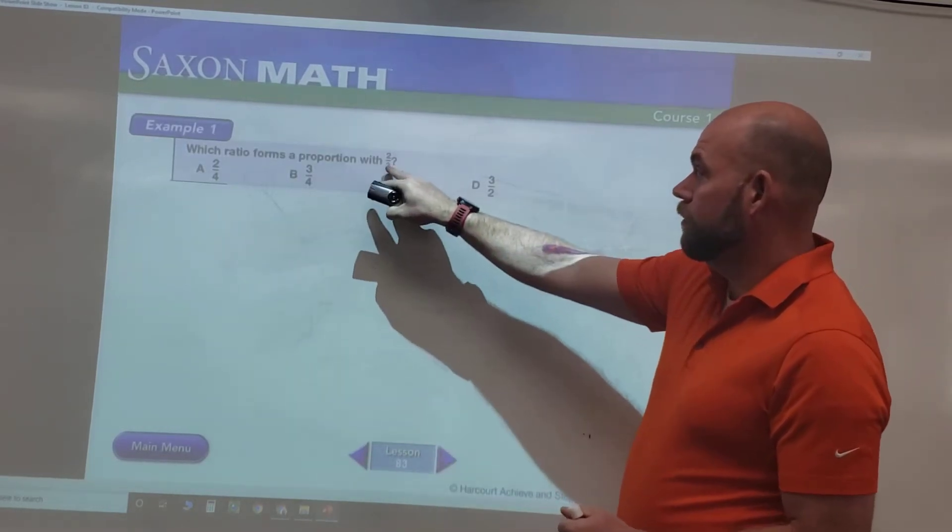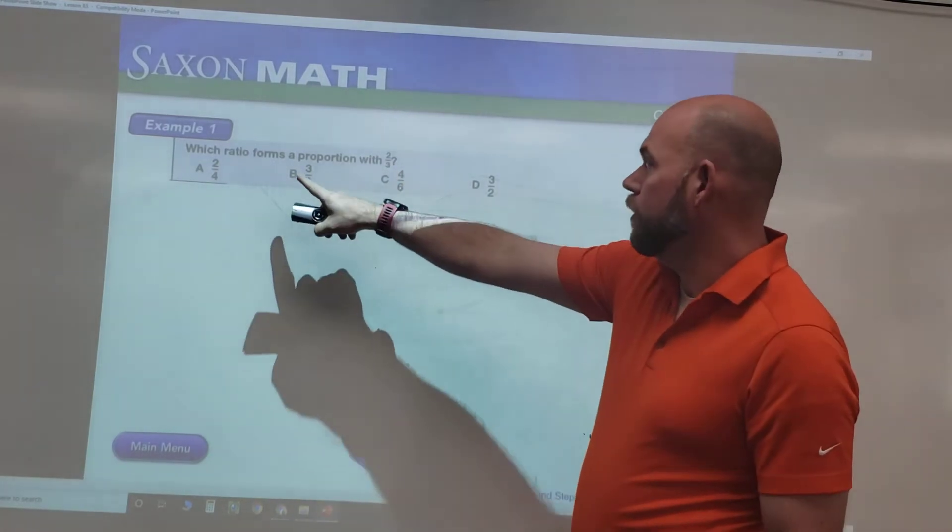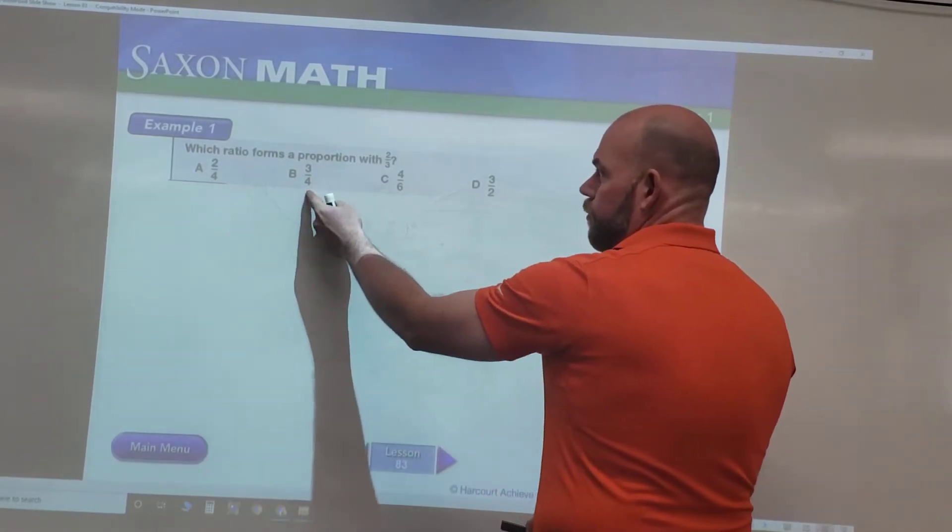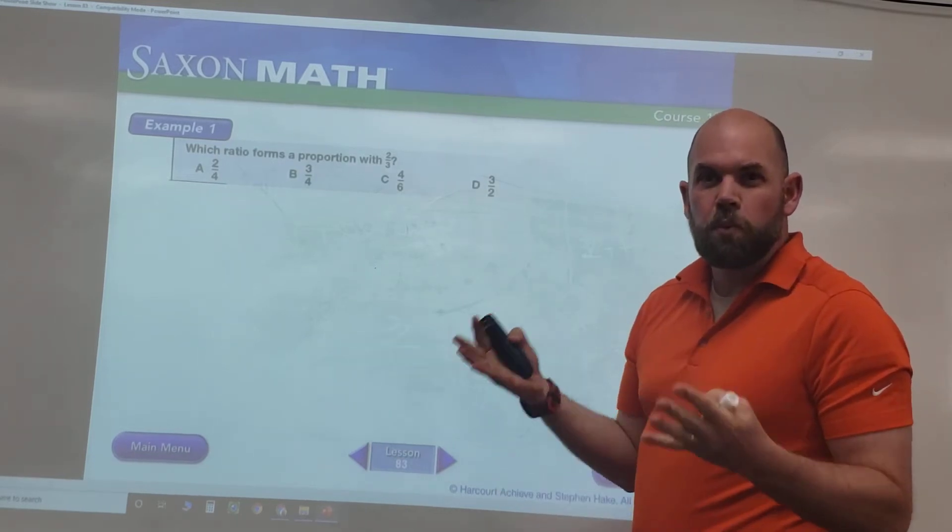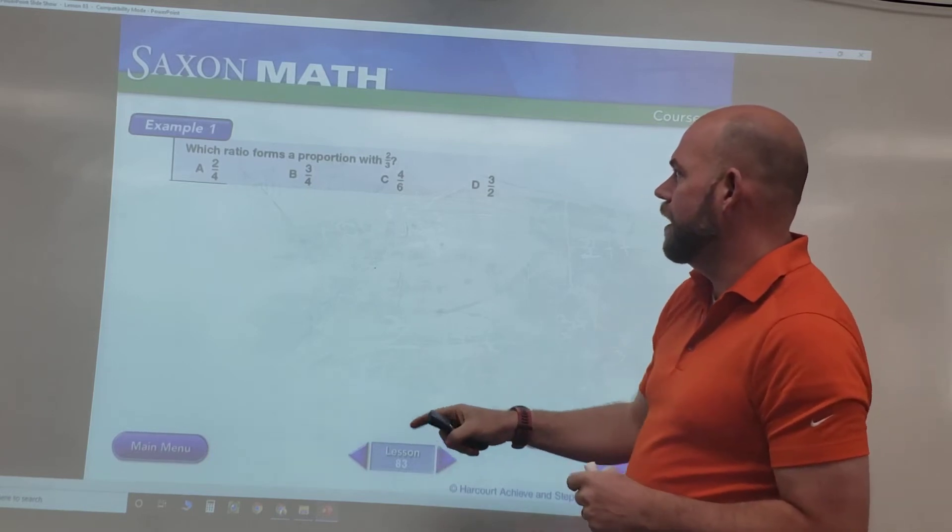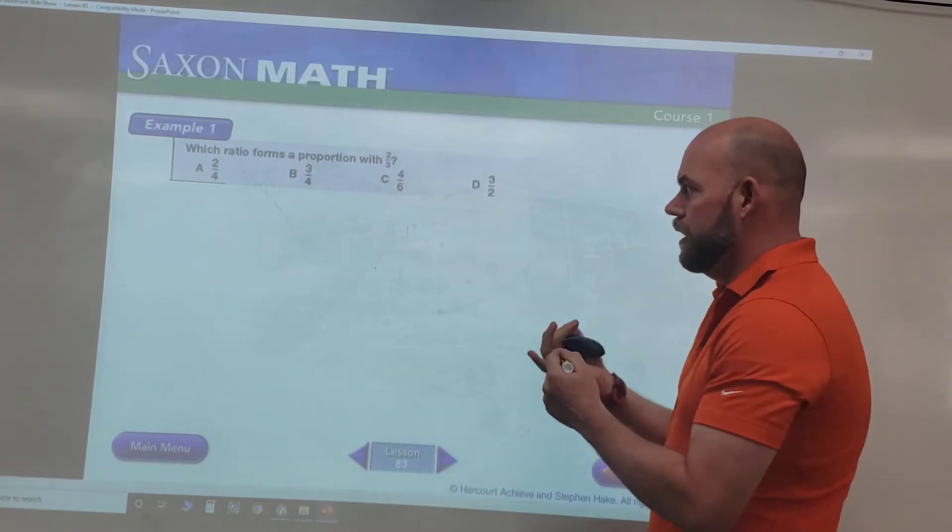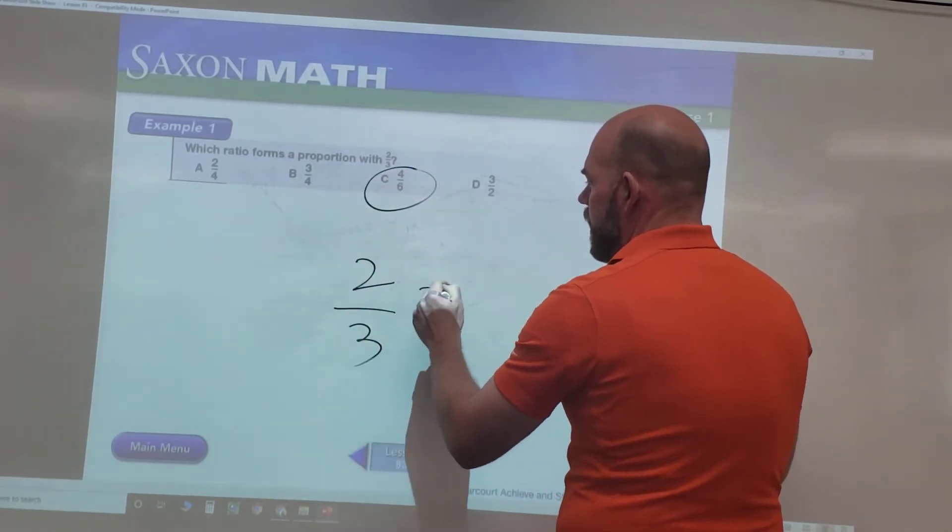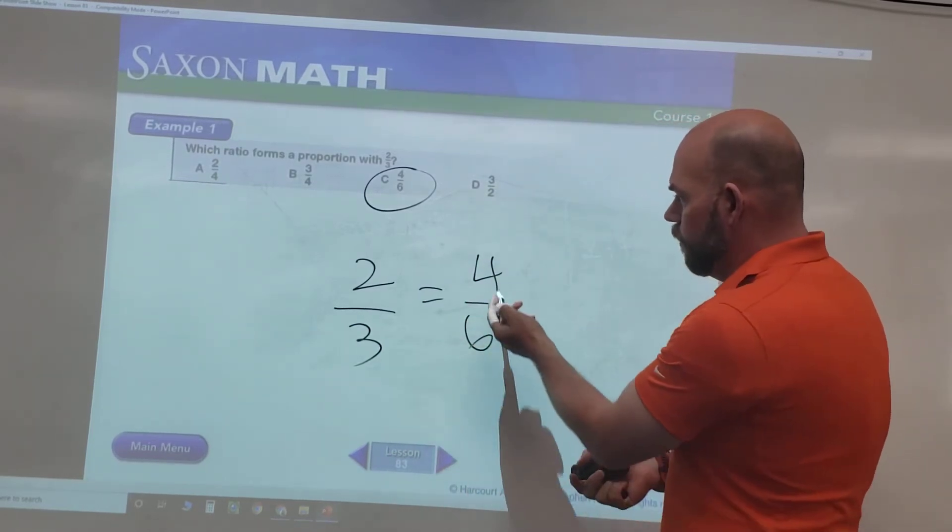In this first example, we'll look at two is to three as what is to what. Which ratio forms a proportion with two over three? Is it two over four, three over four, four over six, or three over two? We have to see which one is equal if we had to reduce or scale it up. In this case, two is to three as four is to six.